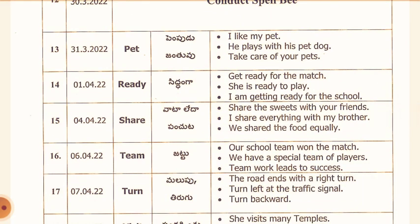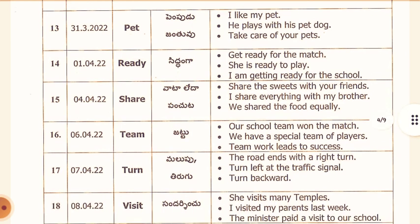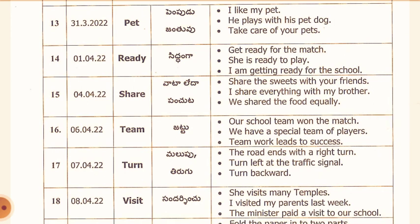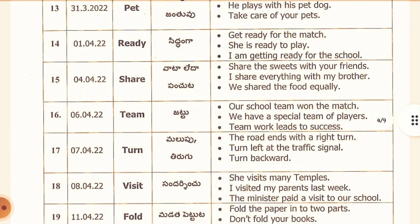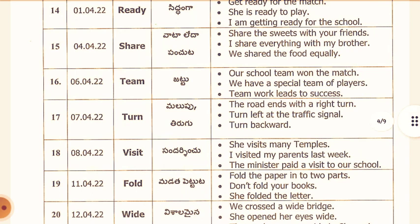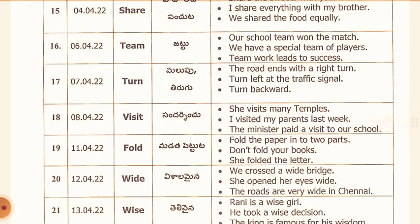6th April: Team. Telugu meaning: Jattu. Our school team won the match. We have a special team of players. Teamwork leads to success. 7th April: Turn. Telugu meaning: Malupu, Tirugu. The road ends with a right turn. Turn left at the traffic signal. Turn backward. 8th April: Visit. Telugu meaning: Sandar Sinchu. She visits many temples. I visited my parents last week. The minister paid a visit to our school. 11th April: Fold. Fold the paper into two parts. Don't fold your books. She folded the letter.